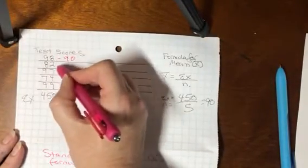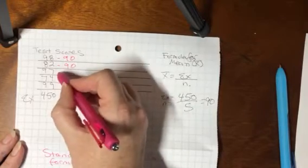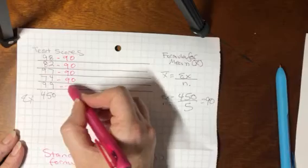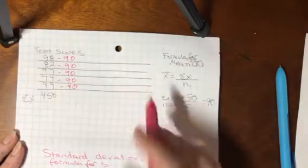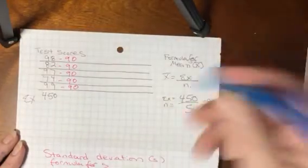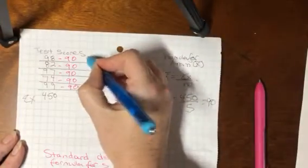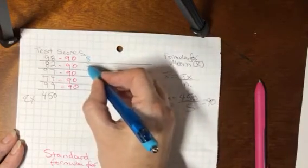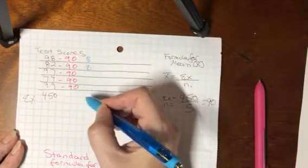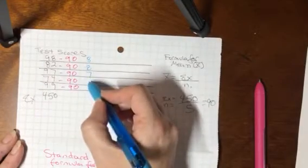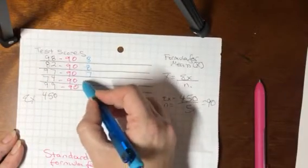The first thing we do is get each distance of each individual x value from the mean. So we're going to subtract the mean which we've already established is 90 from each individual observation or value of x. So 98 minus 90 is 8, 82 minus 90 is negative 8, and then 97 minus 90 is 7.